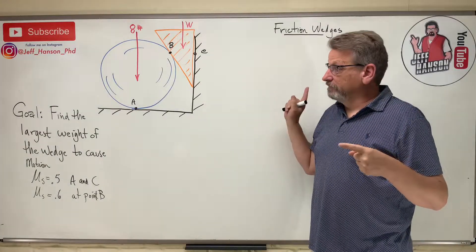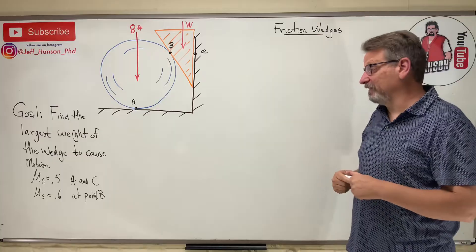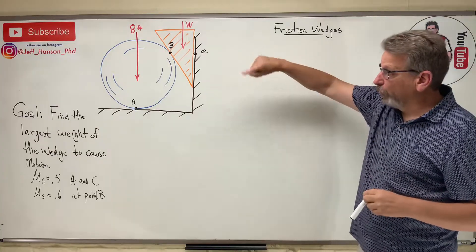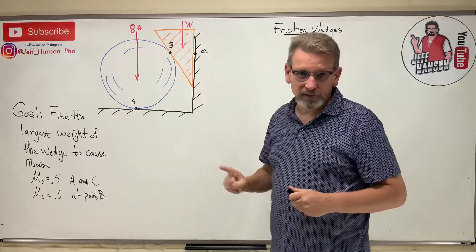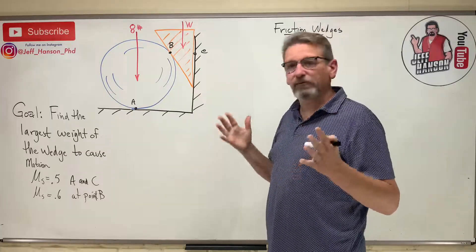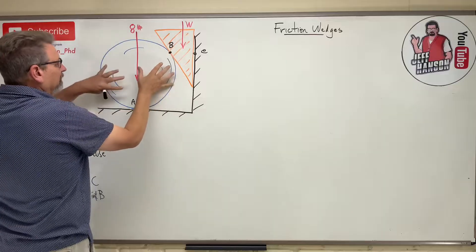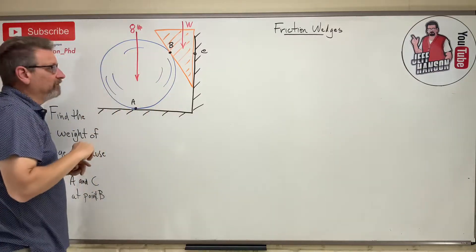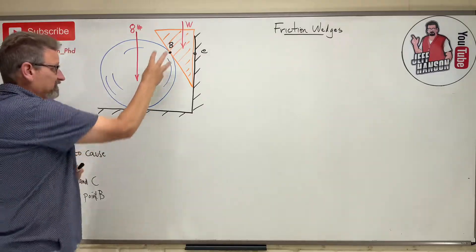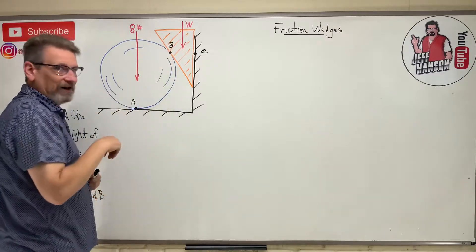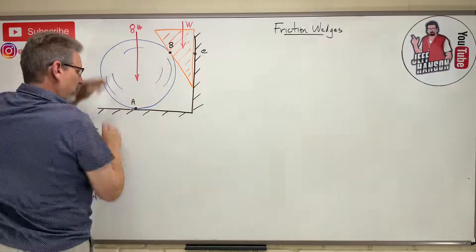Hey friends, we have another wedge problem — a challenge problem, pretty challenging. These roller problems, these wedge problems, are pretty tricky stuff. So: find the largest weight of the wedge that can cause motion. What is motion here? Well, this wedge could slide down, B could slip and the roller would roll away — meaning A doesn't slip and B does slip — or this could be very grippy up here and very slippy down here, and when the wedge goes down this thing would spin out backwards.